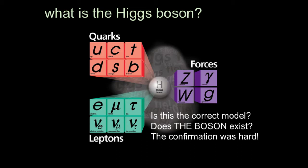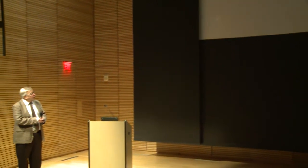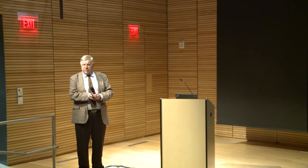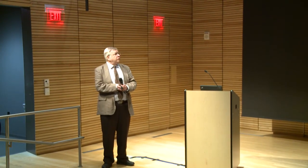Having made this model — and we didn't make the whole model, just the first steps — there was a question: does this boson really exist? The confirmation that it existed was why there was a roughly 40-year search. It took about 10 years before people believed these ideas weren't absolute nonsense. That it was so hard to find this particle is why this big accelerator was built.